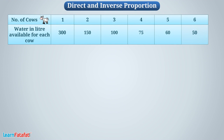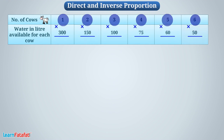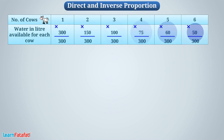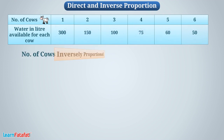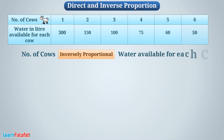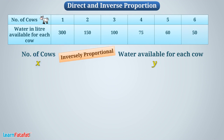We see that as the number of cows increases, water available for each cow decreases in such a manner that the product of cows and water available for each cow remains constant and is equal to the total amount of water in the tank. We say that the number of cows is inversely proportional to the water available for each cow. Let's write the number of cows with letter X and water available for each cow by Y. Then we can say that X is in inverse proportion with Y, represented as X inversely proportional to 1 by Y.